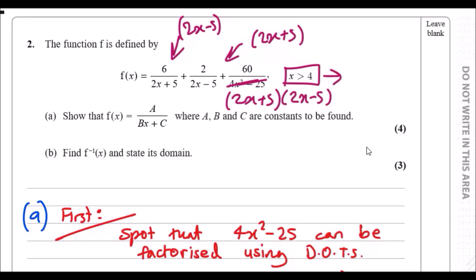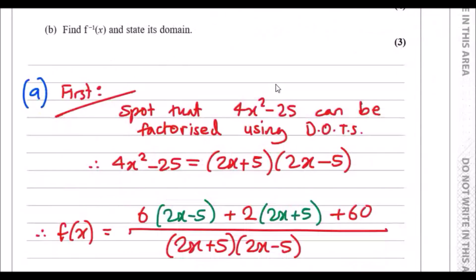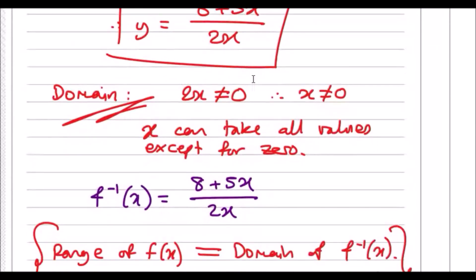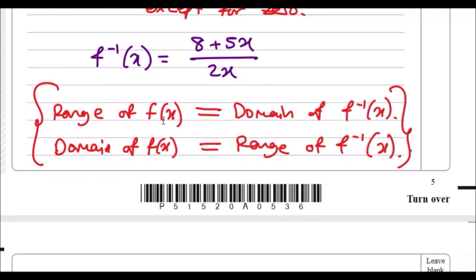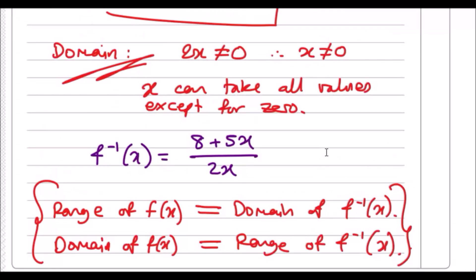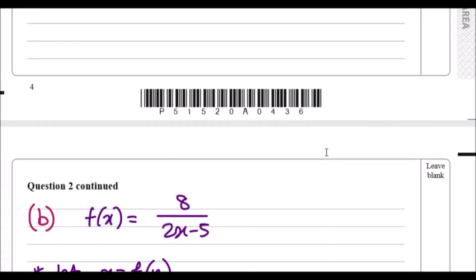This implies that the range of the inverse function is also bigger than 4. So domain of function equals range of inverse function. So I made a note here somewhere. So this is something useful. The range of fx equals the domain of the inverse of fx, whereas the domain of fx equals the range of the inverse. So a very useful tip.